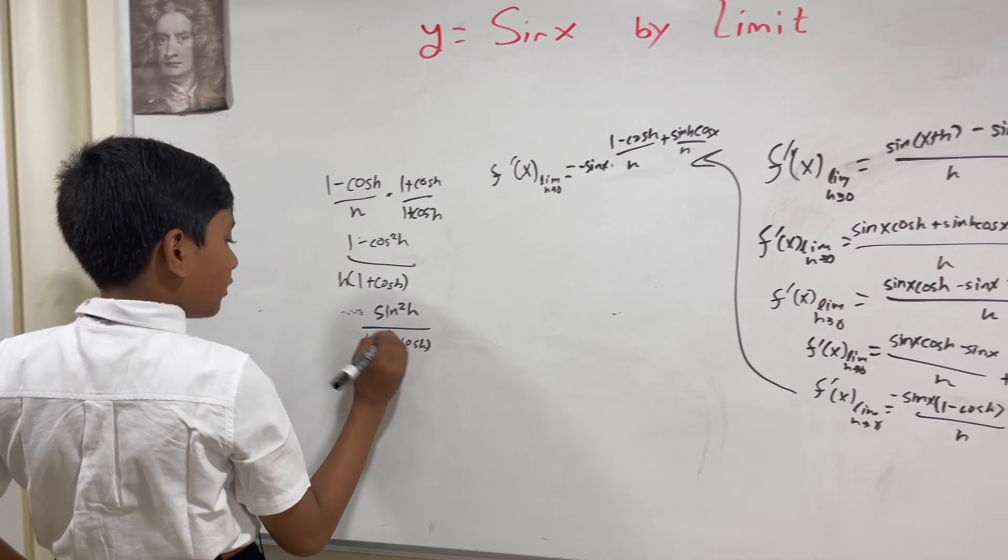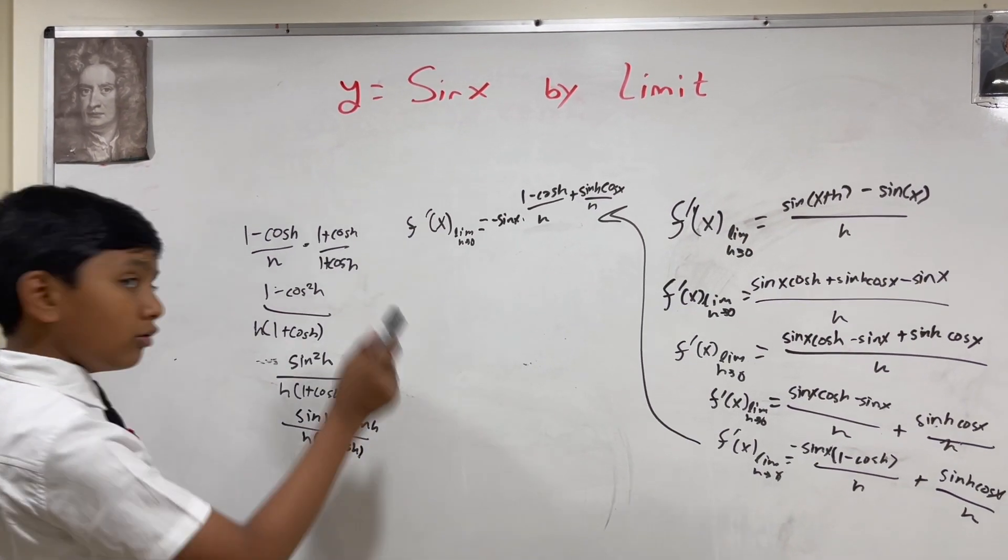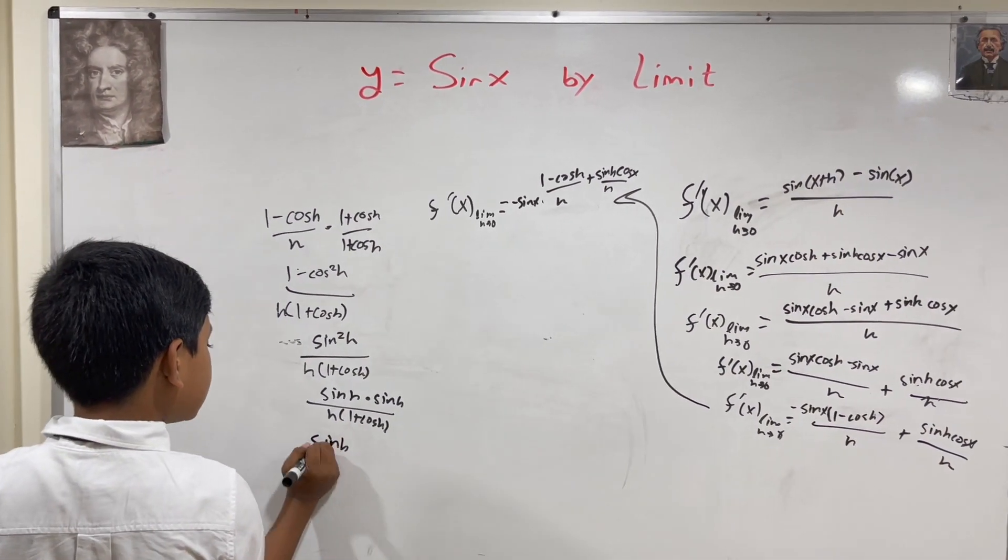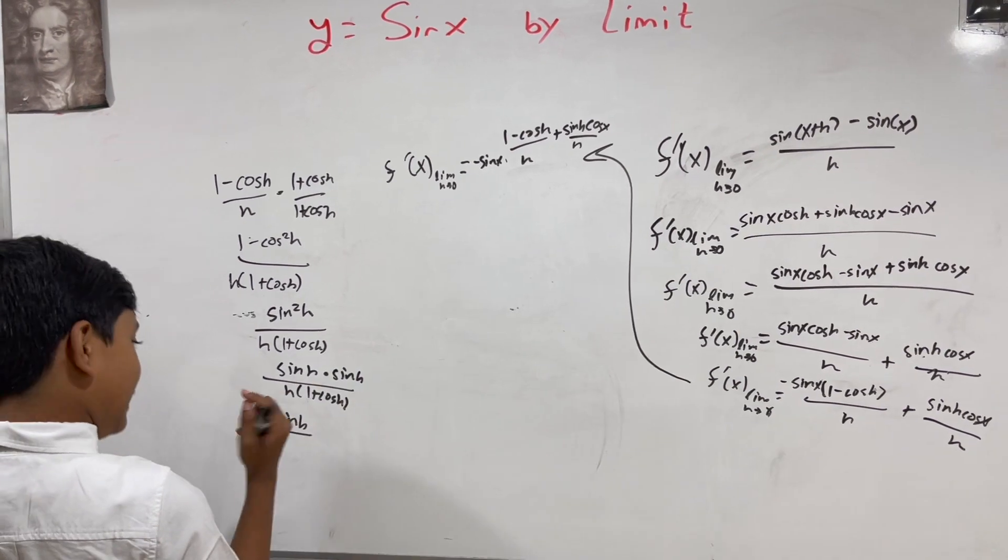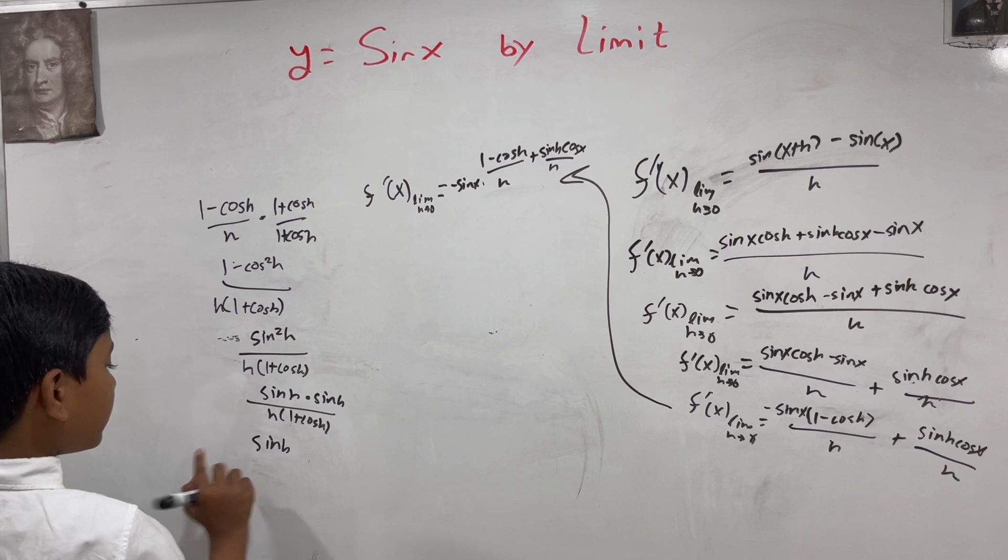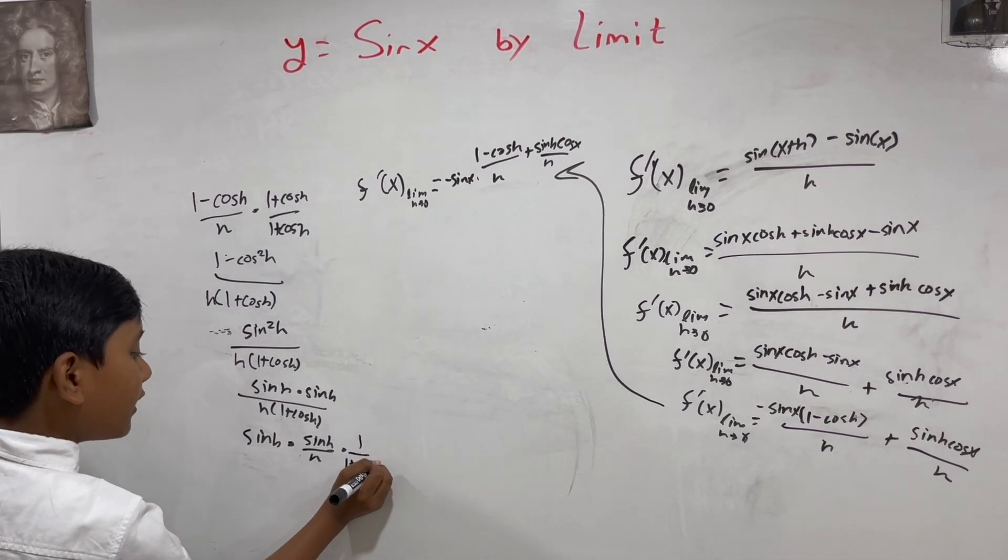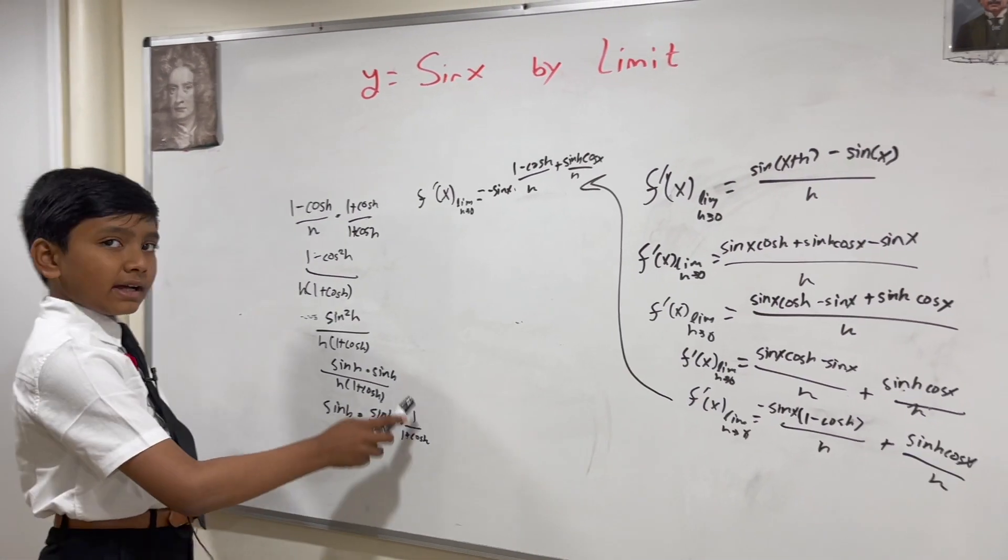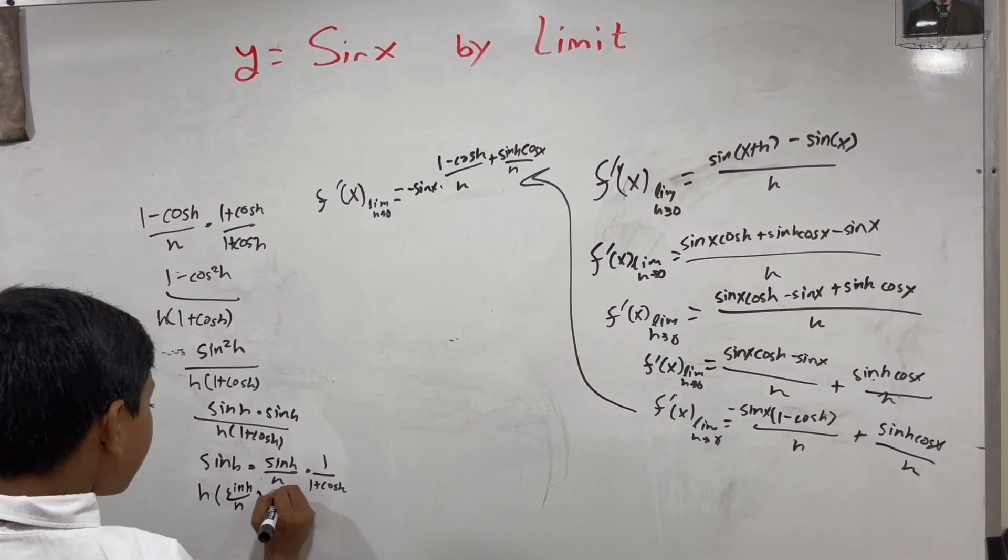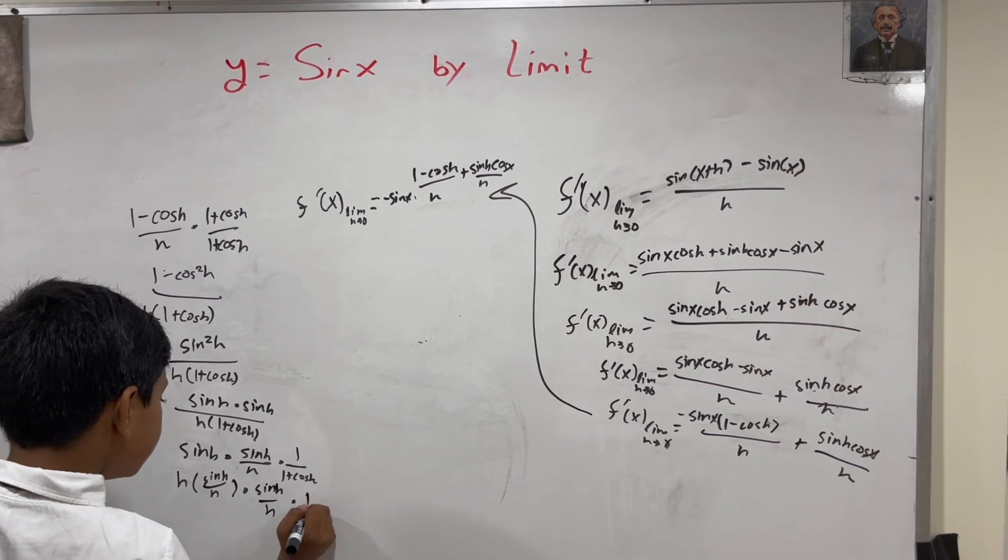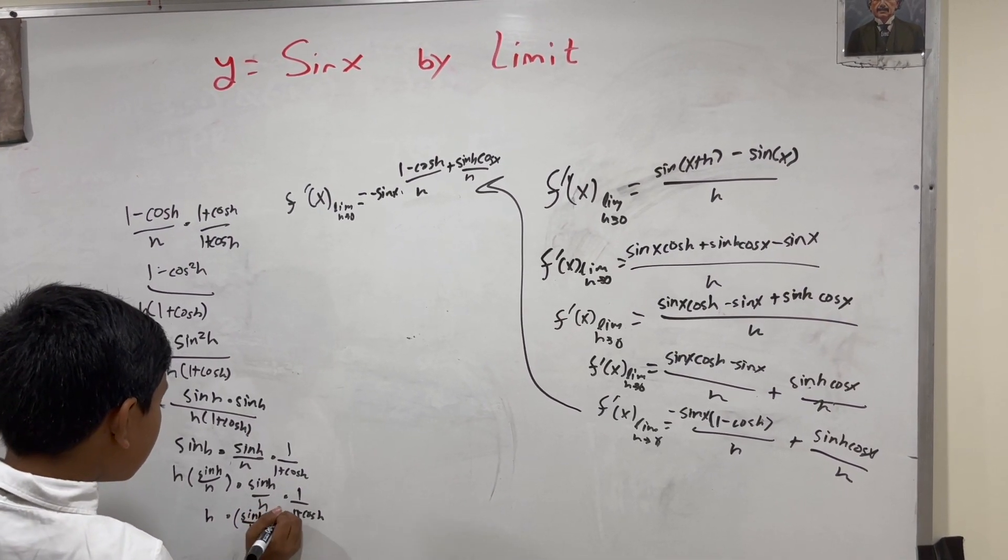Now I'm going to split up this fraction, so we have sine of h times sine of h over h times 1 over 1 plus cosine of h. Now I'm going to factor out h here, so that gives us h times sine of h over h whole squared times 1 over 1 plus cosine of h.